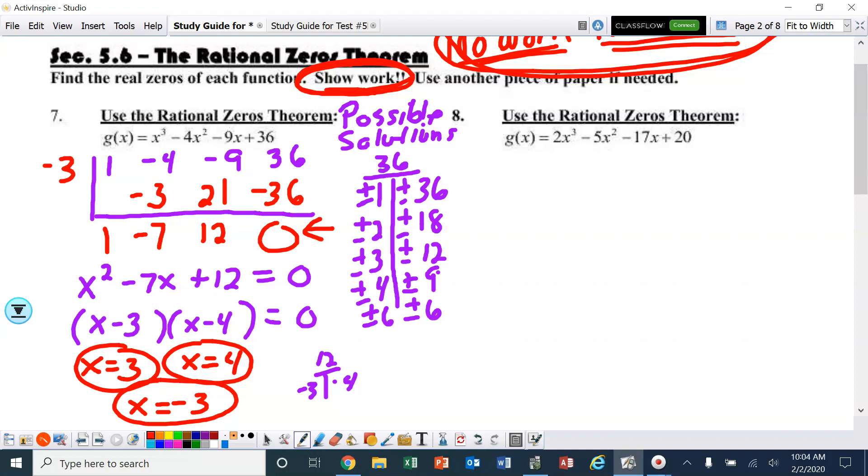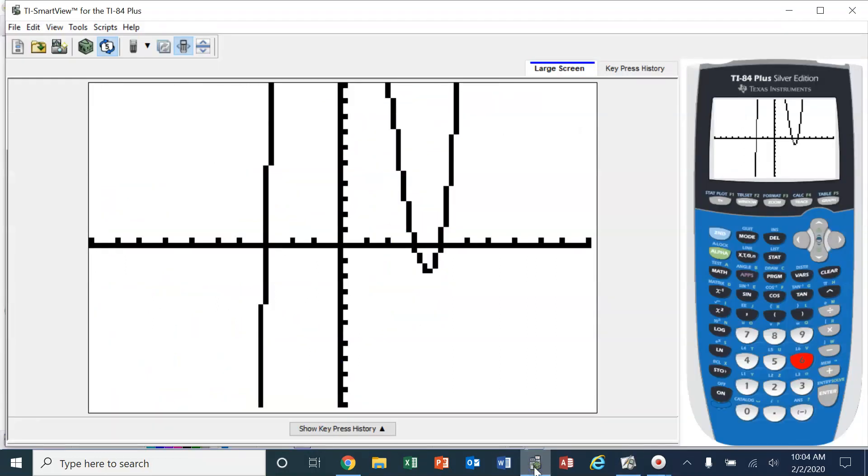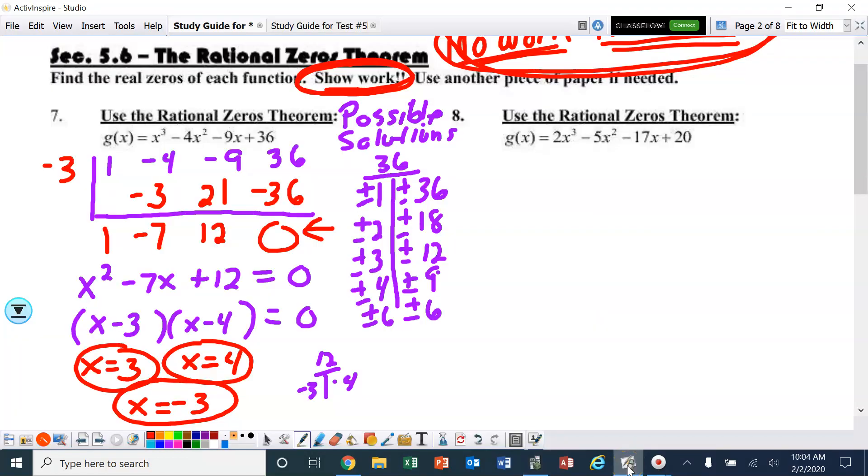The calculator is not always going to show you all of the solutions. If they're integers, it will. But remember, not all of them are going to be integers, which we will see with number 8. So some of the possible solutions are: ±1, ±20, ±2, ±10, ±4, ±5. There are actually others because there's a lead coefficient of 2, but I'm not going to go into that.